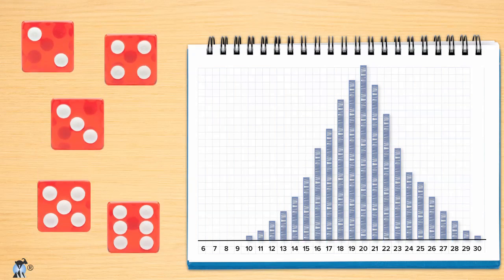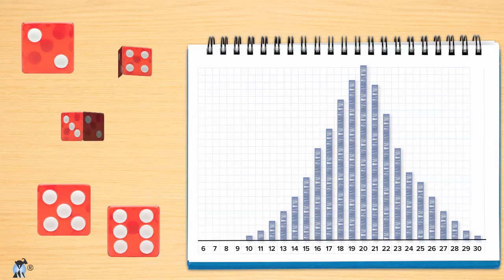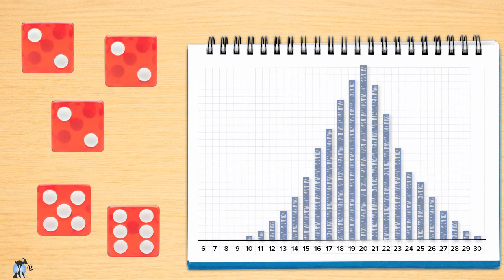What's key with the central limit theorem is the idea that the samples are independent. In our die rolling example, this means that the value on any one die doesn't influence the other dice. If you had one die that was magnetized somehow, and when it showed a two it flipped other nearby dice to two, we would not have this nice normal distribution. Only when the samples are independent do we get this nice normal distribution shape to the graph.